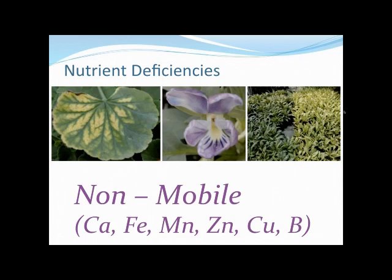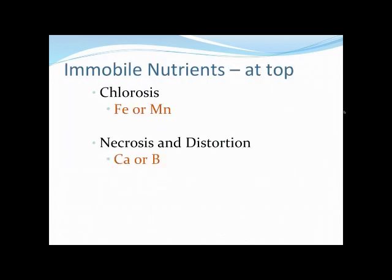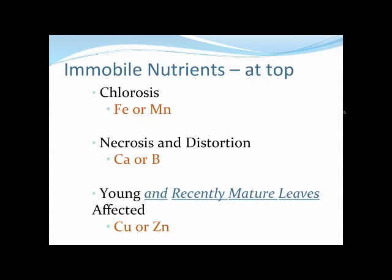That wraps up a little over half of our deficiency symptoms. Moving on to immobile deficiency symptoms — these are ones where the first symptoms show up at the top of the plant. If the top of the plant becomes chlorotic first, we're thinking about iron or manganese. If we have necrosis and distortion at the top, it's going to be either calcium or boron. And if it's the most recently matured leaves — the second rank down from the top — it's copper or zinc.